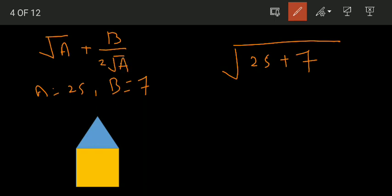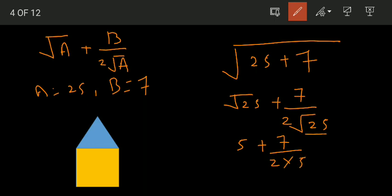So here a is 25, b is 7, upon 2√25. So here, 5 plus 7 divided by 10, which means 5 plus 0.7, which means 5.7.